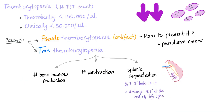Thrombocytopenia is decreased platelet count — theoretically less than 150,000, clinically less than 50,000. There are two types of causes: pseudo-thrombocytopenia, the spurious type, which is an artifact — don't trust the machine — and the true thrombocytopenia.